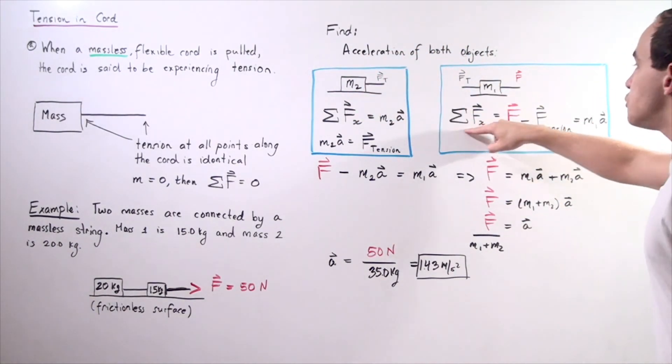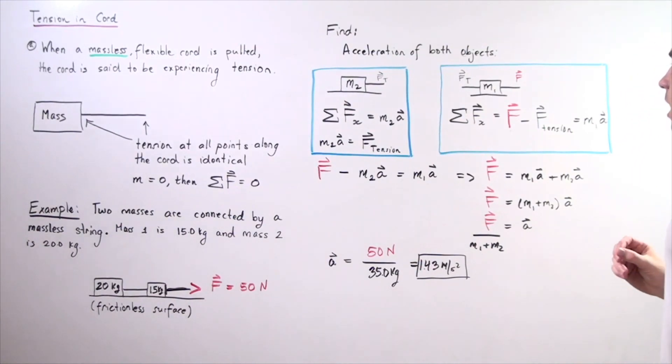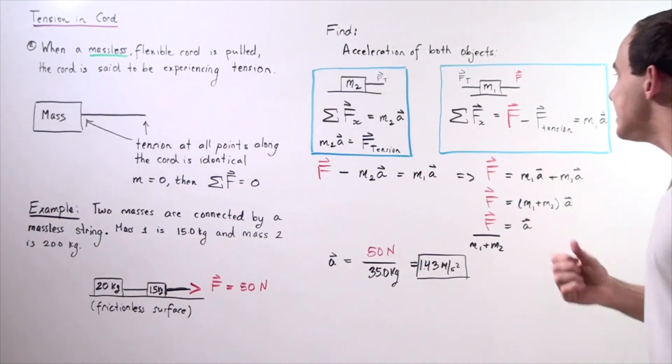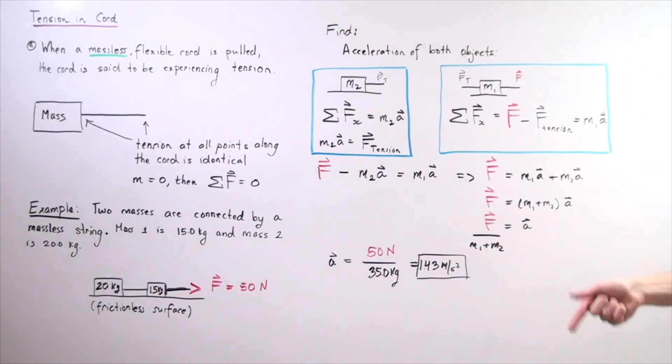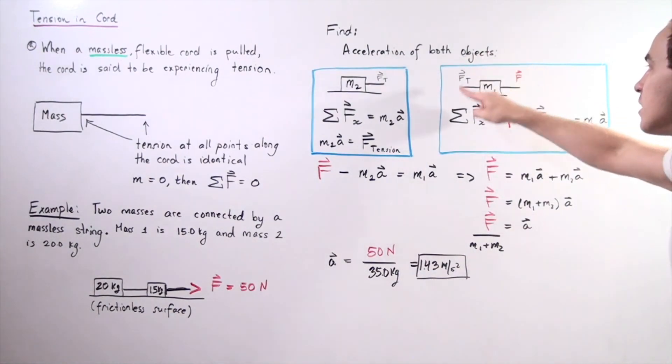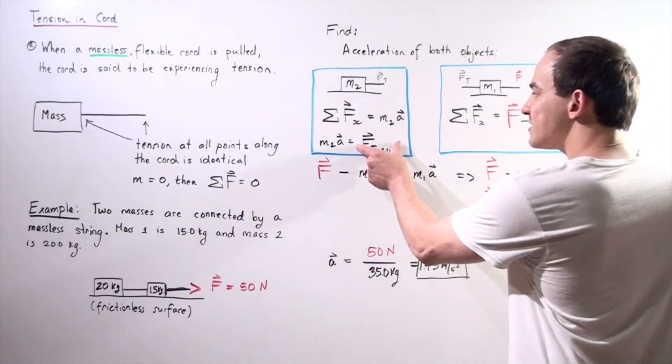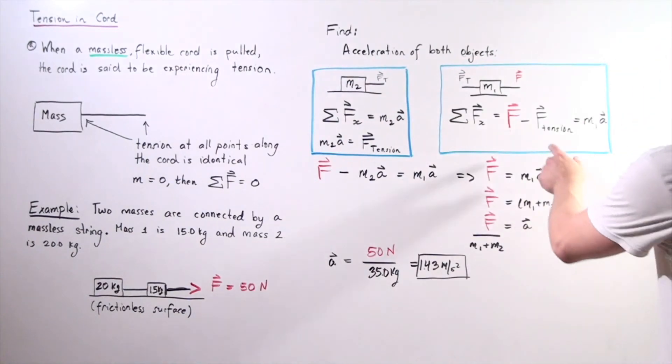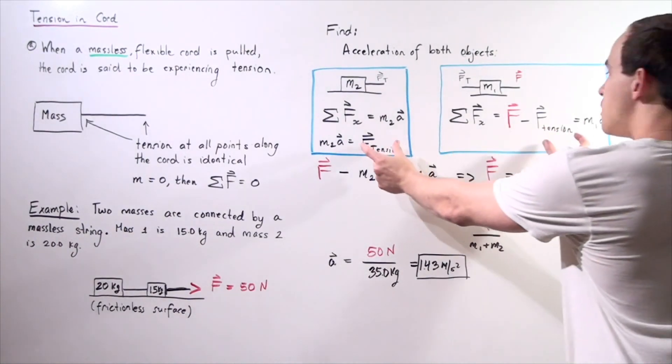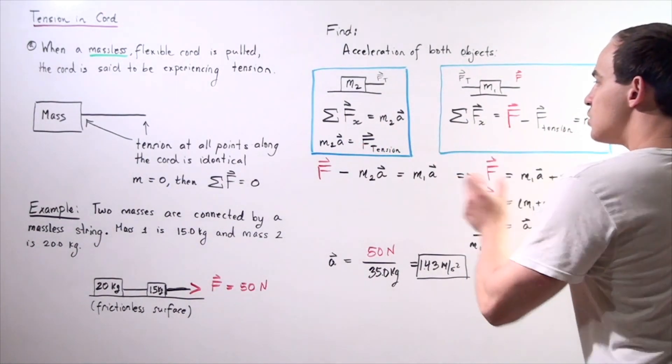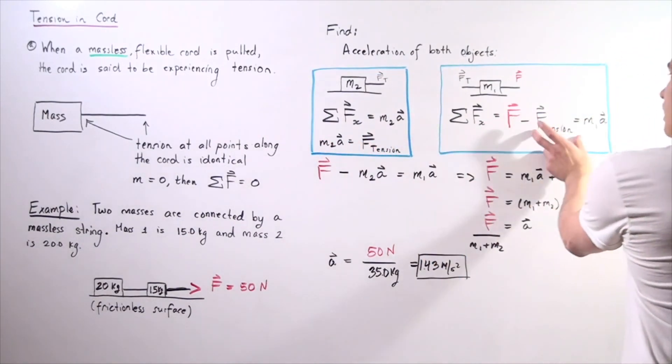Our sum of the forces along the x-axis is equal to this positive force minus this negative force, our force tension, equal to the mass of object number one multiplied by its acceleration. Notice that we can take this force tension and plug it into this force tension because they're exactly identical. So I take this and I plug it into here.